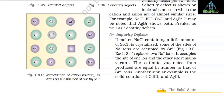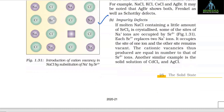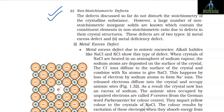Schottky defect is shown by ionic substances where cations and anions are of almost similar sizes, e.g., NaCl, KCl, CsCl, and AgBr. AgBr shows both Frenkel and Schottky defects. (b) Impurity defects: if molten NaCl containing a small amount of SrCl₂ is crystallized, some sites of Na⁺ ions are occupied by Sr²⁺. Each Sr²⁺ replaces two Na⁺ ions — it occupies one site and the other remains vacant. A similar example is a solid solution of CdCl₂ and AgCl.